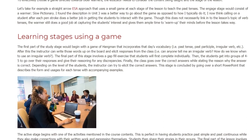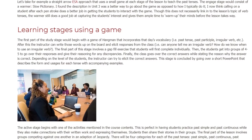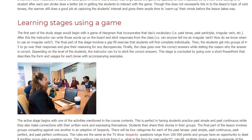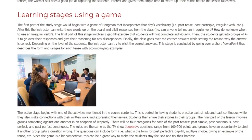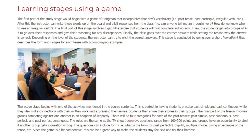The active stage begins with one of the activities mentioned in the course contents. This is perfect for having students practice past simple and past continuous while they also make connections with their written work and expressing themselves. Students then share their stories in their groups. The final part of the lesson involves groups competing against one another in an adaptation of Jeopardy. There will be 4 categories for each of the past tenses — past simple, past continuous, past perfect, and past perfect continuous. The rules are the same as the TV show Jeopardy; questions range from 100 to 500 points and groups have an opportunity to steal if another group gets a question wrong.